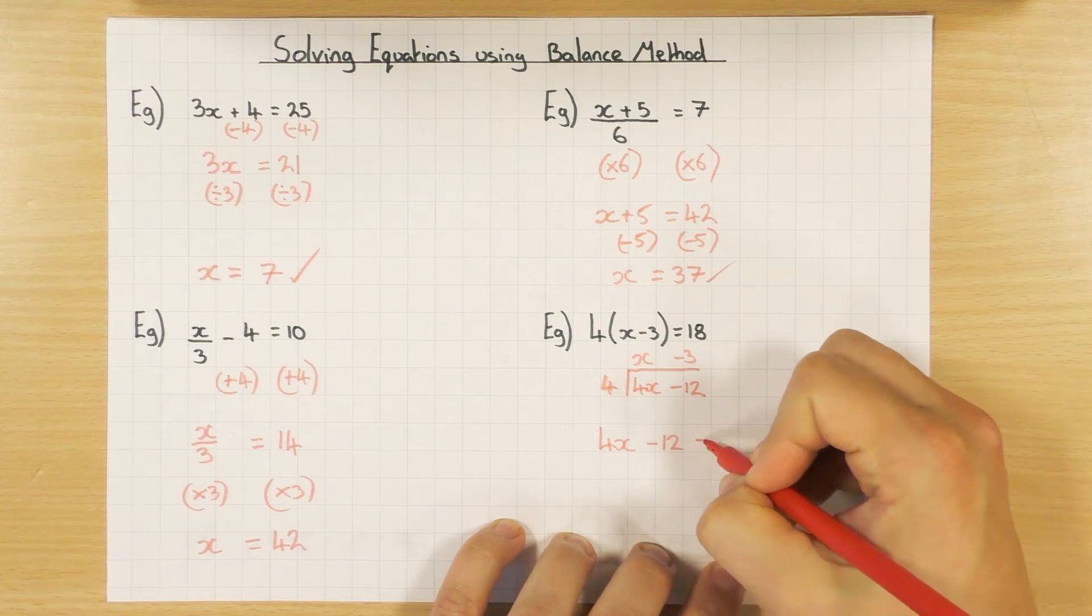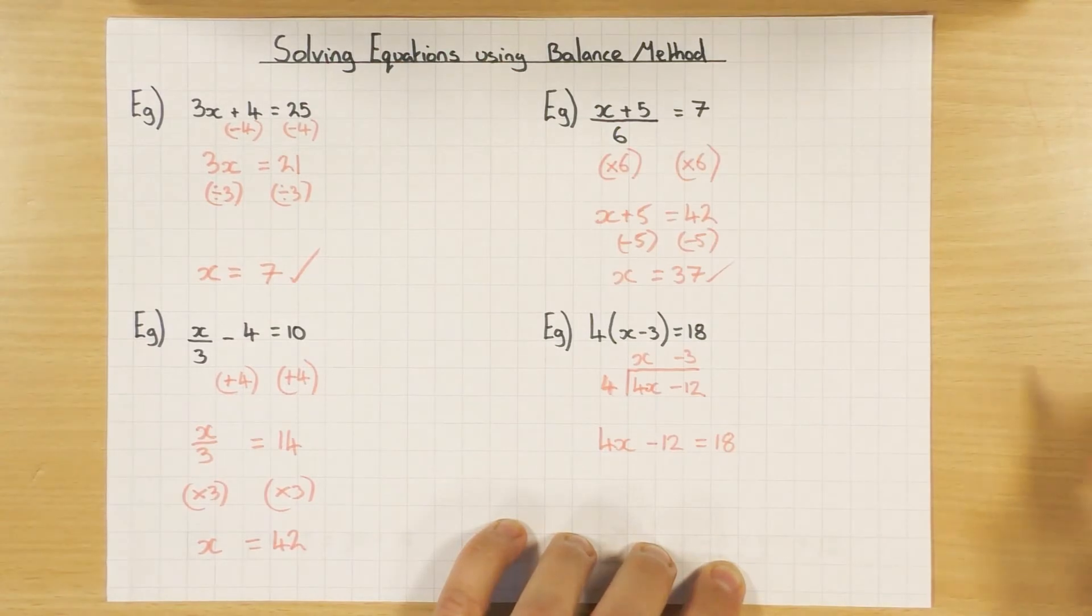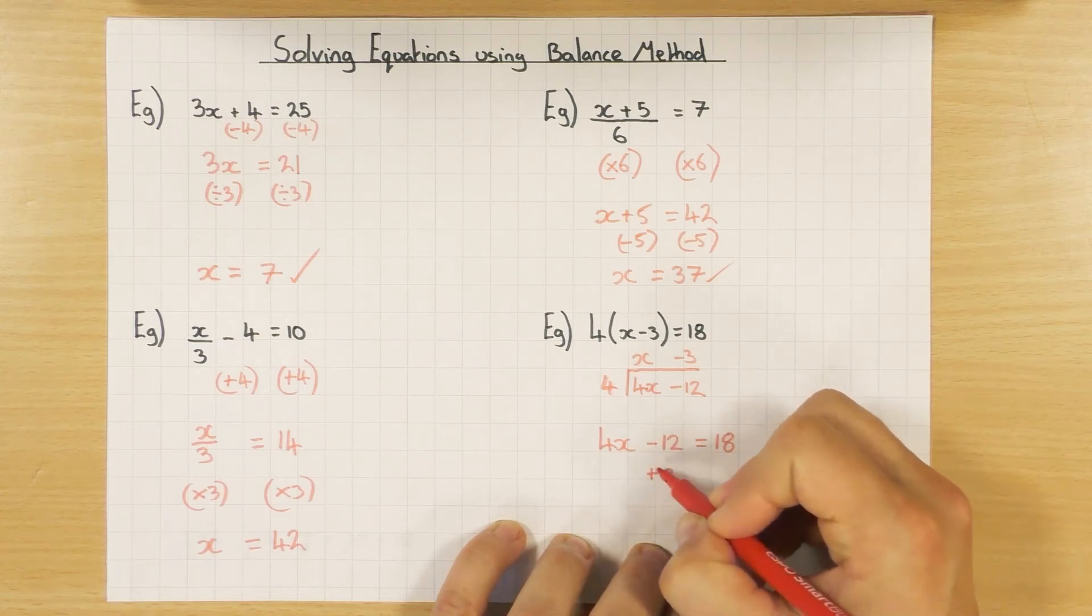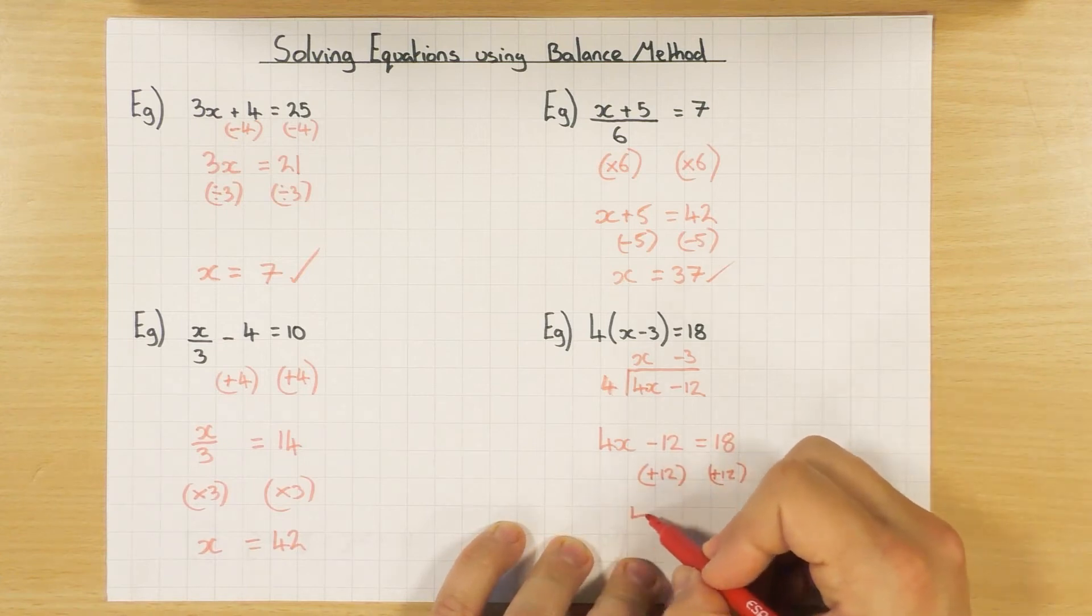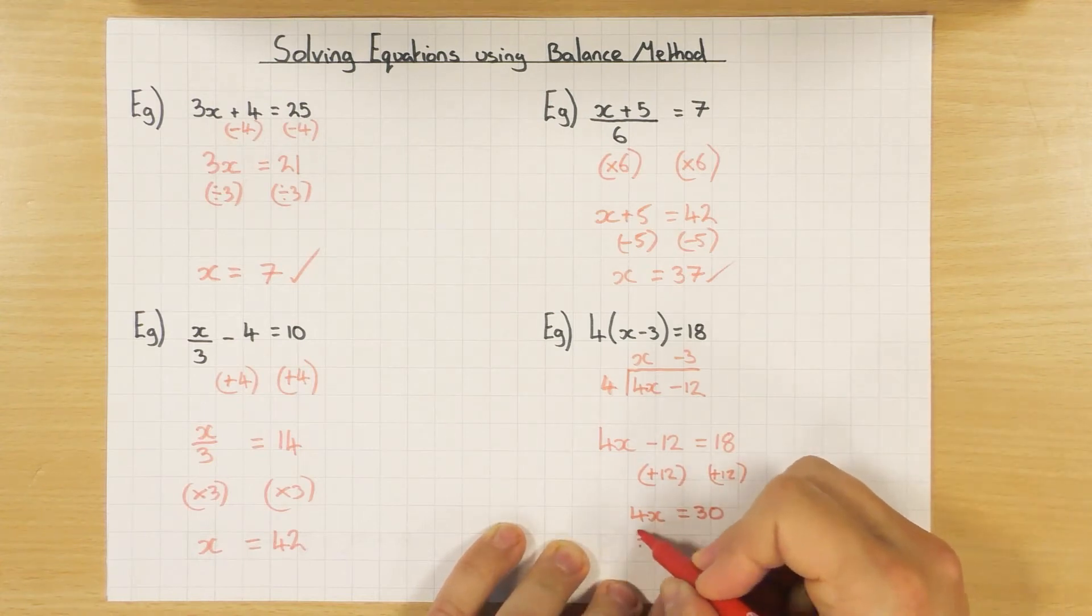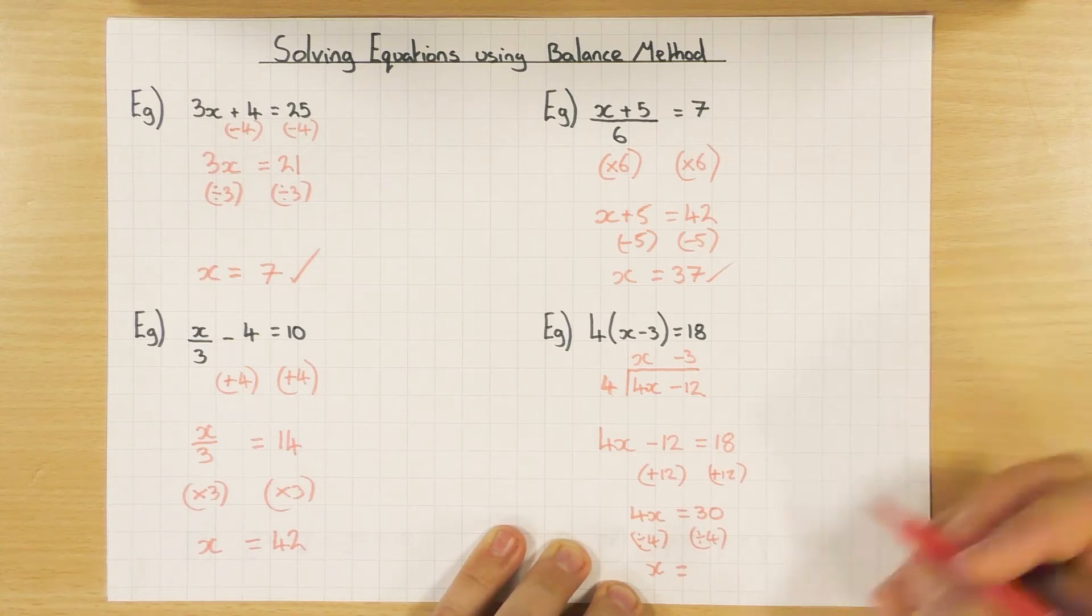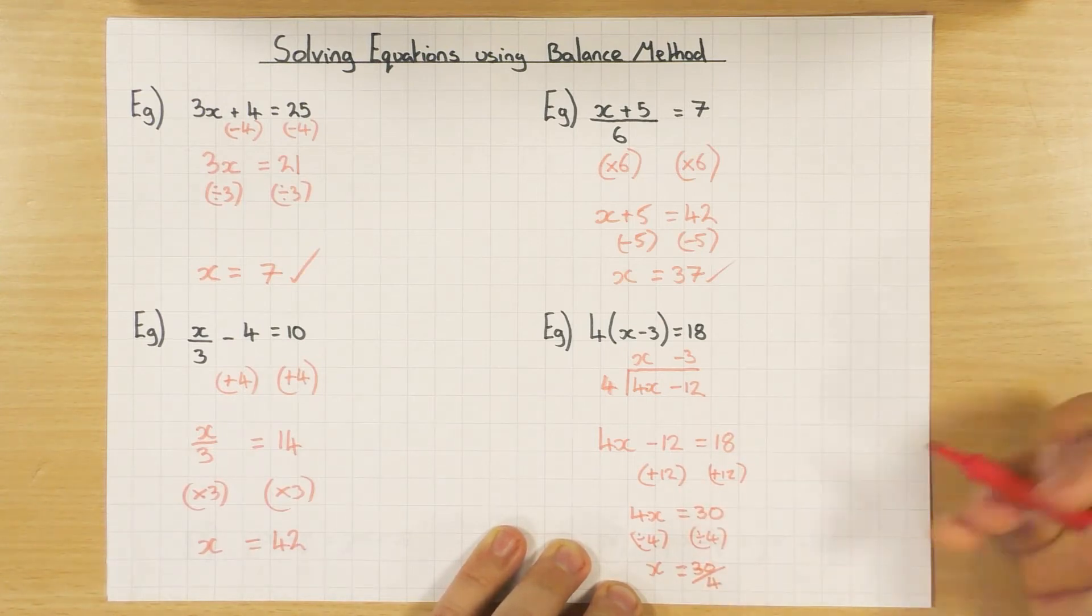So 4x minus 12 equals 18. And I'm then going to solve this. And it's exactly the same, really and truly, as solving my very first example. I'm going to leave the x tied up with the 4 there. Get rid of that number by doing the opposite, which is obviously plus 12 in this case. And that leaves me with 4x equals 30. And then divide by 4 both sides, keeping it balanced. So 4x divided by 4 is obviously x, which is what we're after.